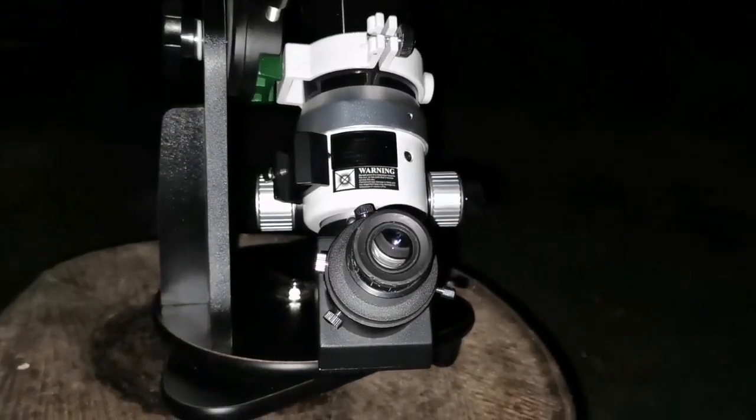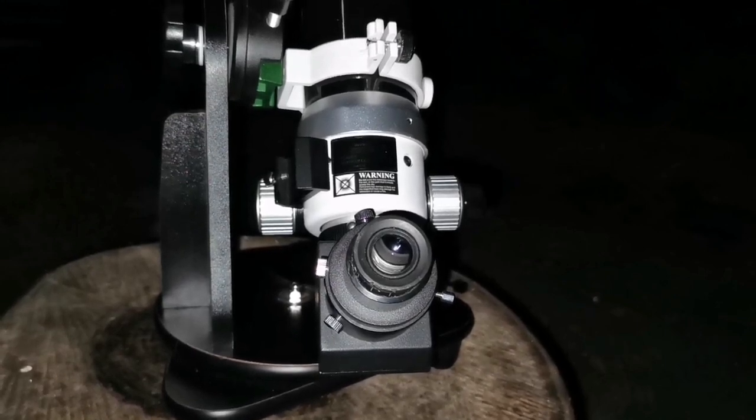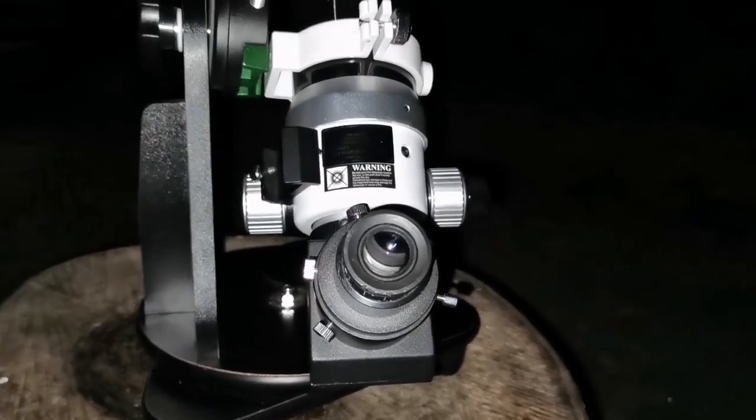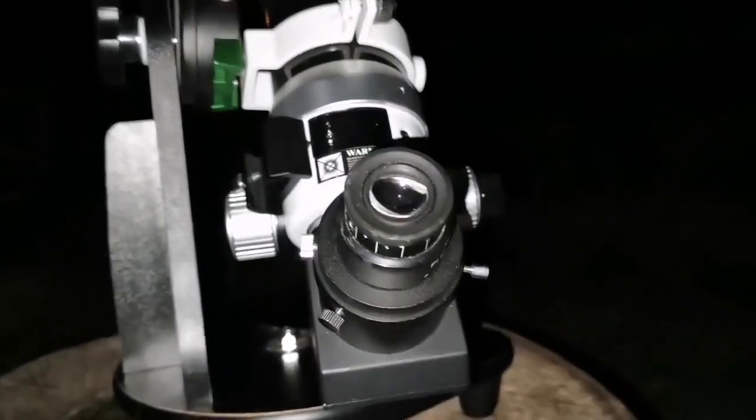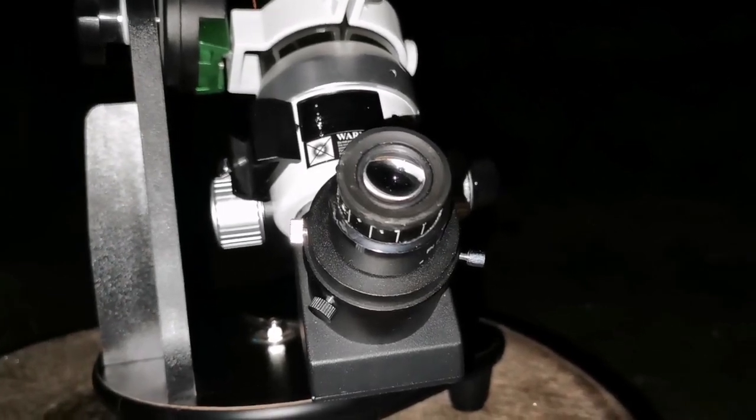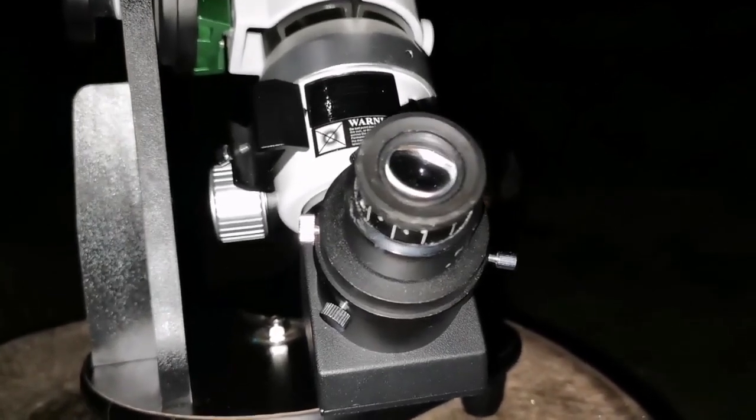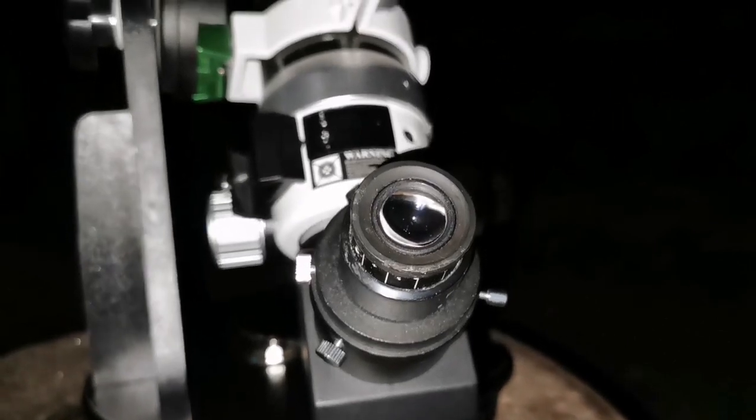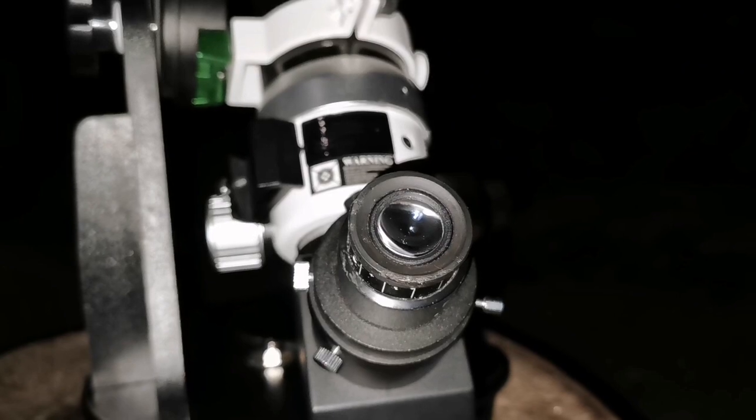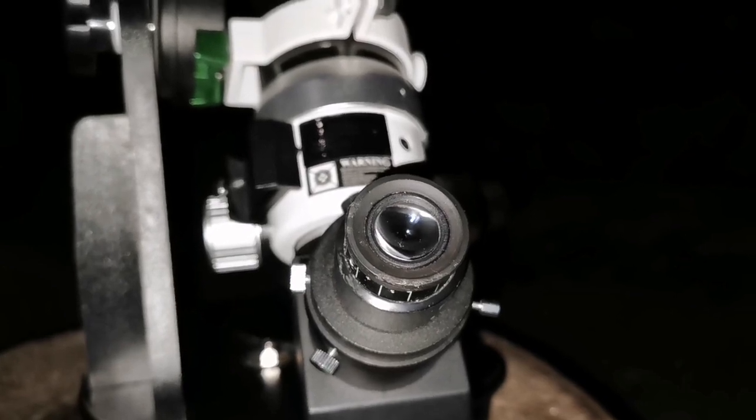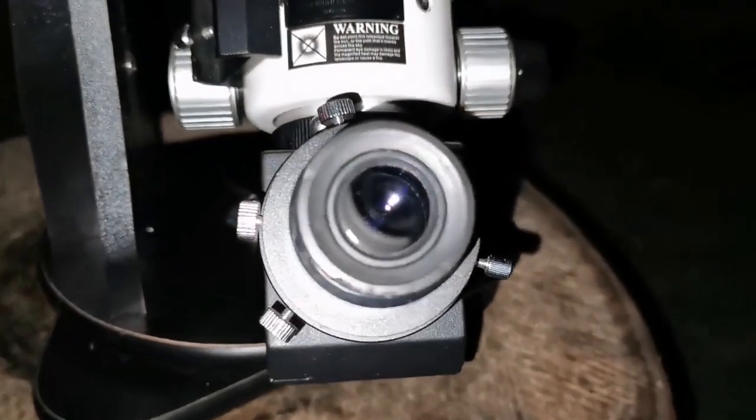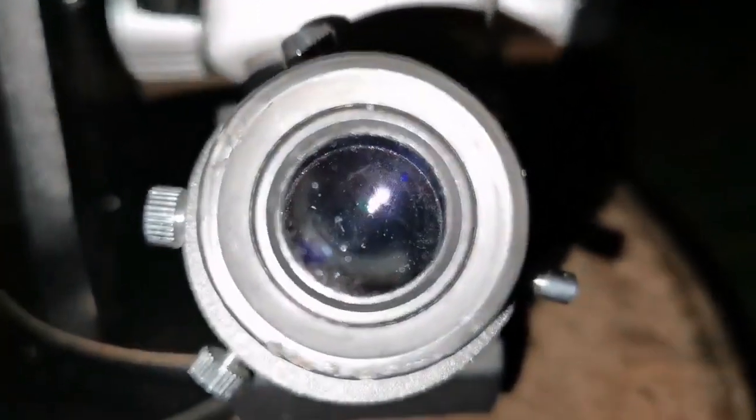This is the Skywatcher ED-72 Apochromatic Telescope that I'm using and this is the Zeiss 25mm 57 degrees eyepiece. This is the Zeiss PL 10x20. Let's see how is the view to this telescope. I will take astrophotos.